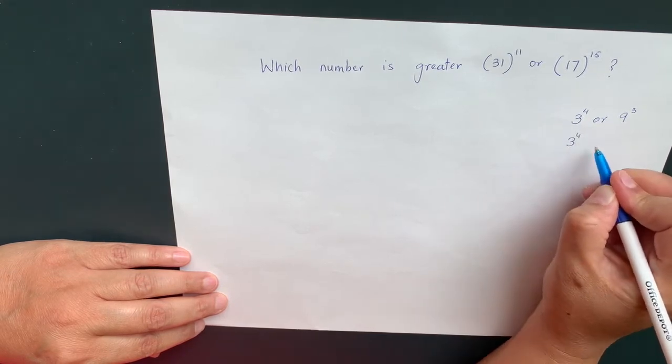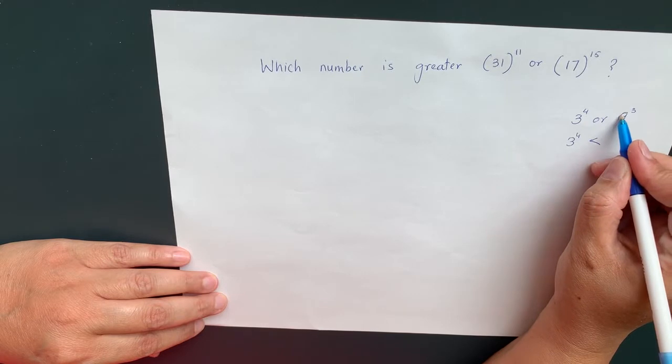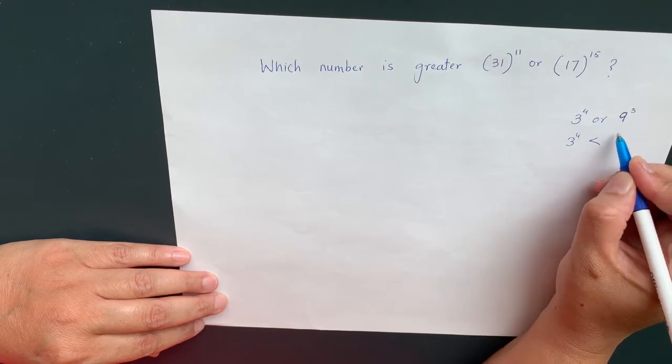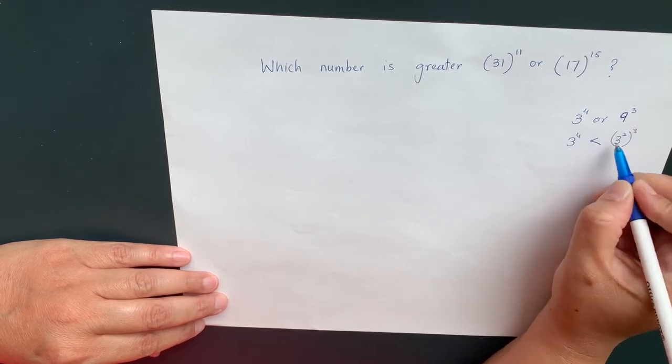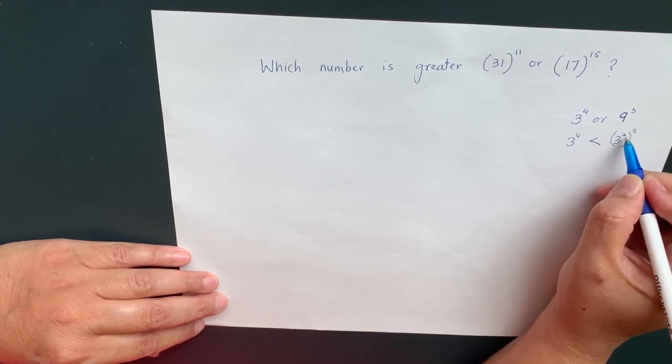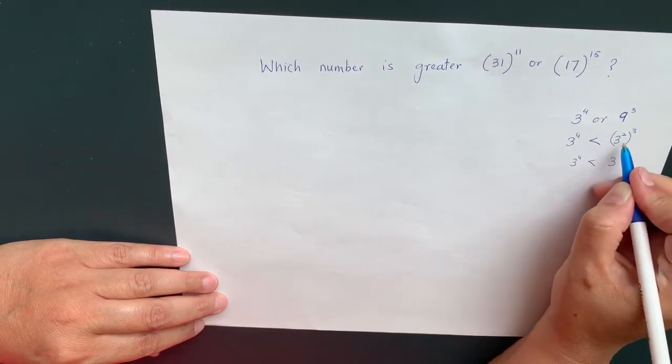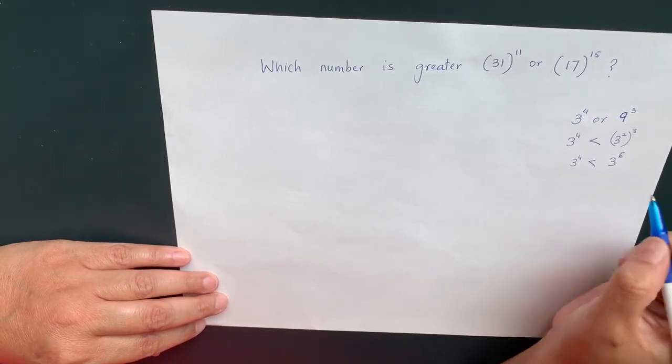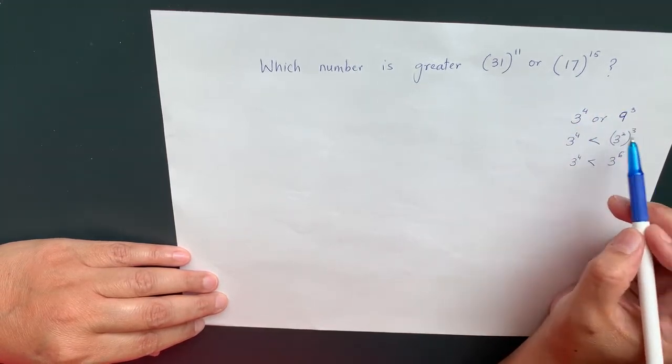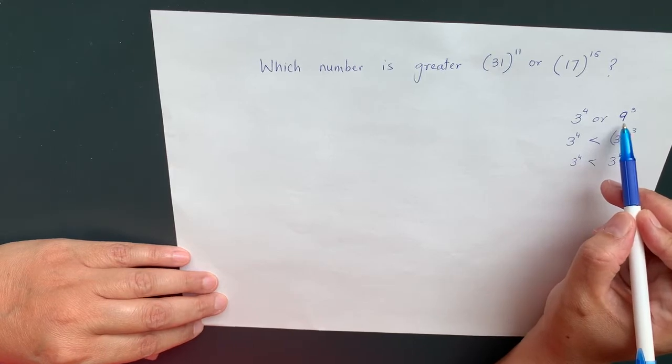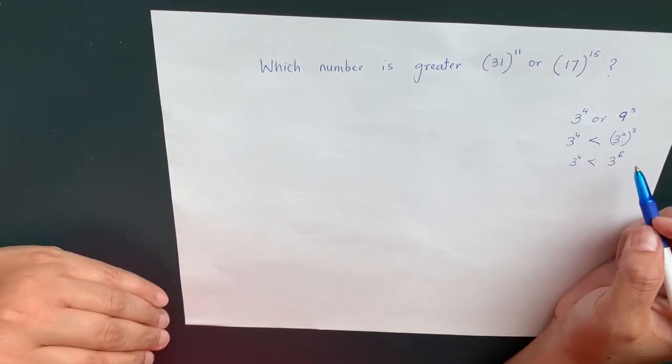Because you can bring the number 9 to the base of 3 and say 3 to the power of 2 to the power of 3, right? You can write 9 as 3 to the power of 2. So which is 3 to the power of 4 is less than 3 to the power of 6. So when the number is pretty small you can easily find it out, and when they have the same base you just compare their exponent and figure out which number will be greater.